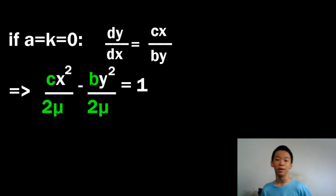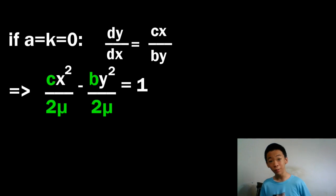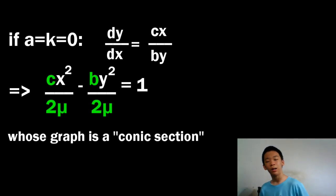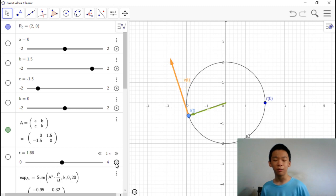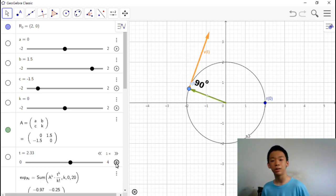Remember that in the first case, where a and k are both 0, we had an ellipse or a circle as the graph? Well, shapes like these are referred to as the conic sections, and they're the paths that a satellite make around a planet. If b equals negative c, then the velocity would always be perpendicular to the position vector.